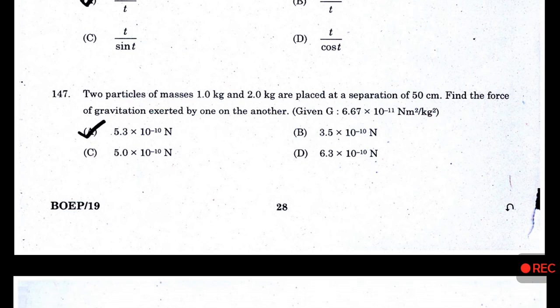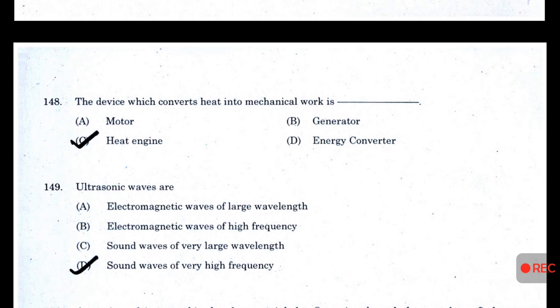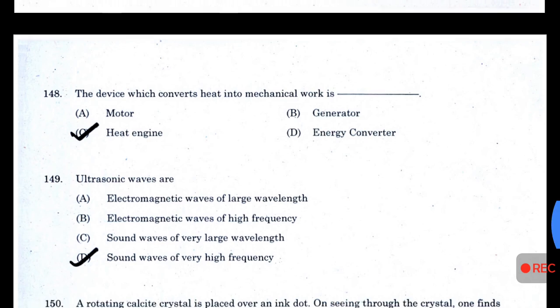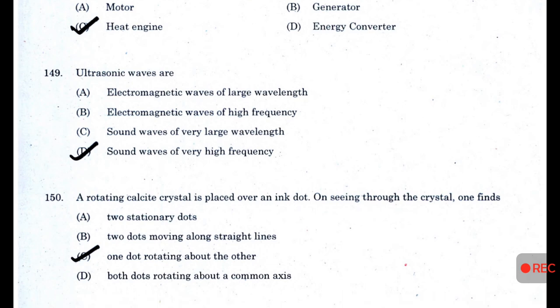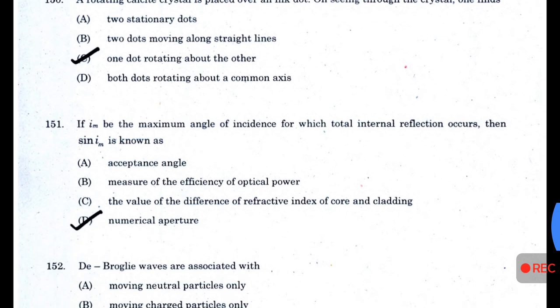Two particles of masses 1 kg and 2 kg are placed at a separation of 50 cm. The gravitational force exerted by one on the other — answer A — is 5.3 × 10⁻¹⁰ N. The device which converts heat into mechanical work is called — answer C — a heat engine. Ultrasonic waves are sound waves of very high frequency.